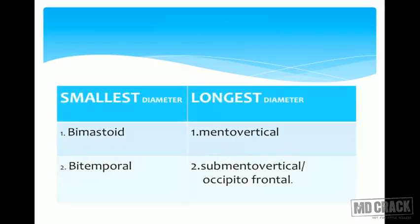MCQ summary: smallest diameter of the fetal skull transverse — bimastoid 7.5 cm; if bimastoid is not an option, then bitemporal. Longest AP diameter — mentovertical, brow presentation, 14 cm; if that option is not there, go for submentovertical or occipitofrontal.